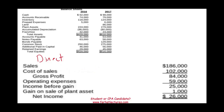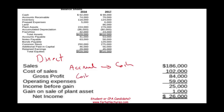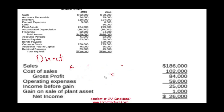What's neat about the direct method is it will help you understand converting accrual to cash. Sometimes you might have to convert cash to accrual, but understanding how accrual to cash works will help you in understanding cash to accrual. That's the neat thing about the direct method. It only applies to the operating section of the statement of cash flows.